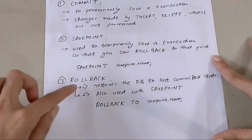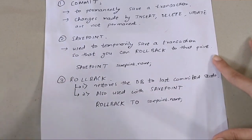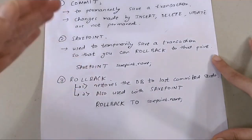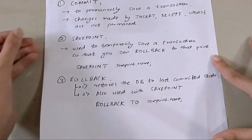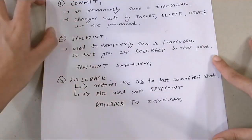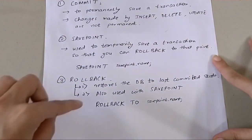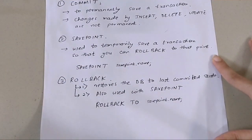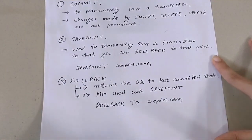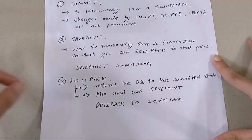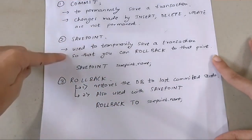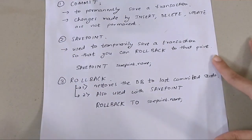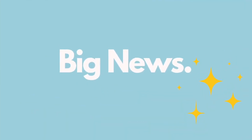The third TCL command is ROLLBACK. It is used in two ways: first, simply writing ROLLBACK restores the database to the last committed state — you get the old values back. Second, ROLLBACK TO savepoint_name rolls back to a specific savepoint, restoring the values to what they were at that point without needing a commit.